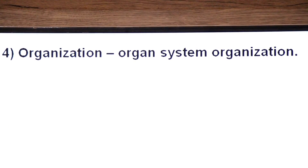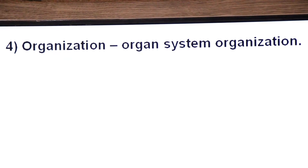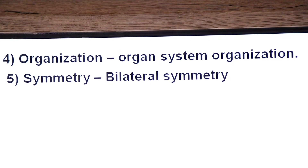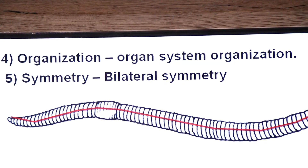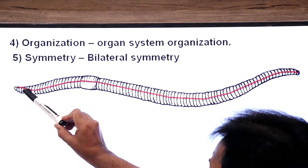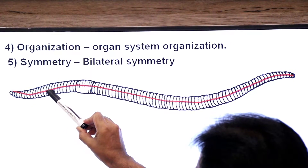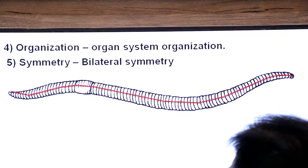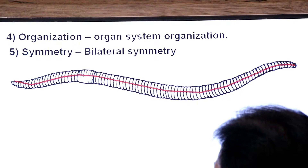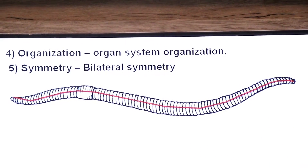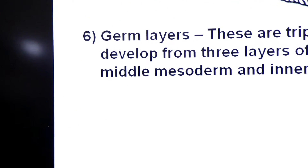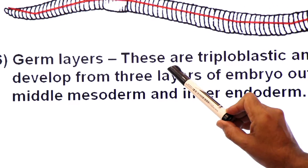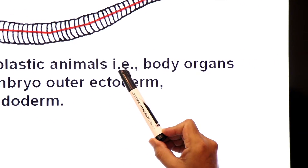What is the organization in Annelida? They have organ system level of organization. Their symmetry is bilateral symmetry — two-sided symmetry. In bilateral symmetry, the body can be cut into two similar halves by a single imaginary line, giving a right side and a left side. In the embryo, three germ layers are present: ectoderm, endoderm, and mesoderm.